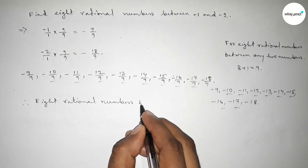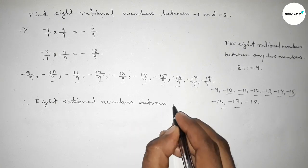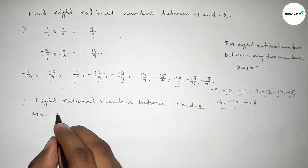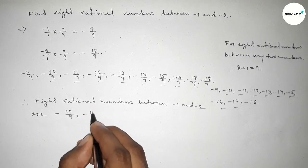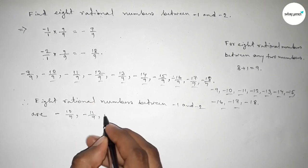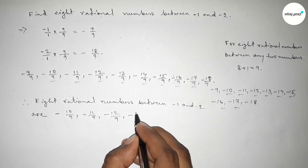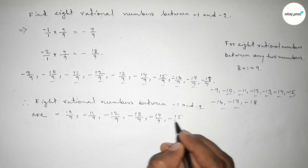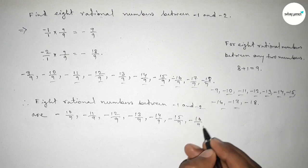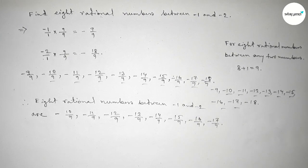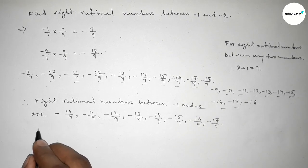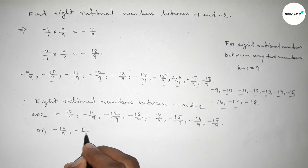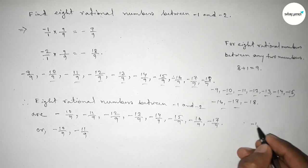Therefore the required 8 rational numbers between minus 1 and minus 2 are: minus 10 over 9, minus 11 over 9, minus 12 over 9, minus 13 over 9, up to minus 17 over 9. We can also simplify — for example, minus 12 over 9: if you divide both numbers by 3, you get minus 4 over 3.